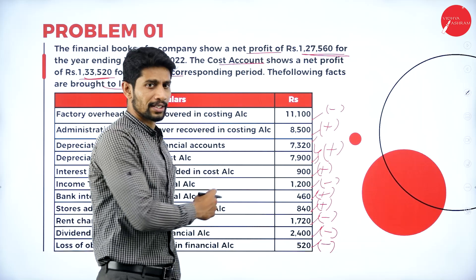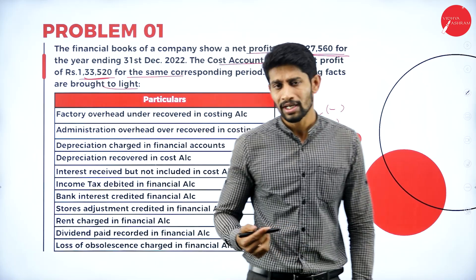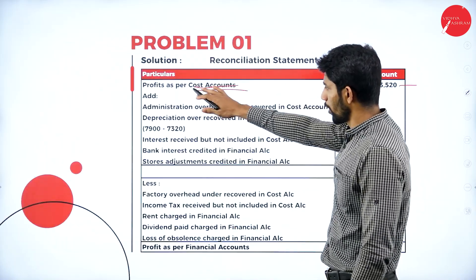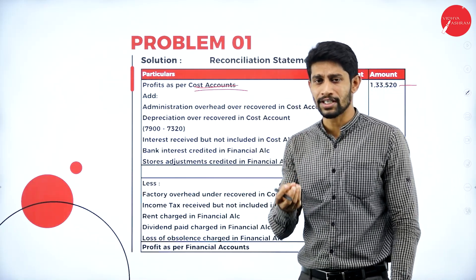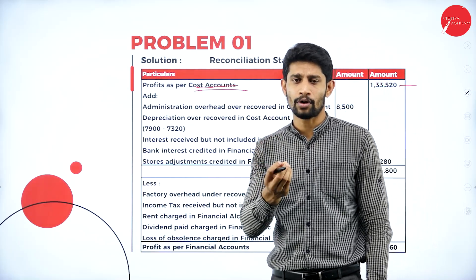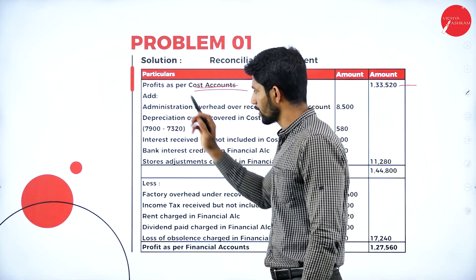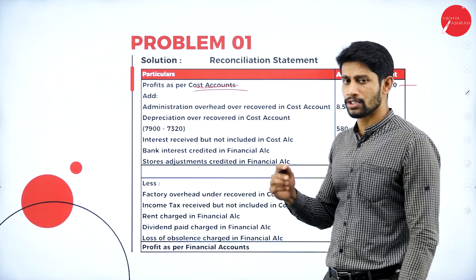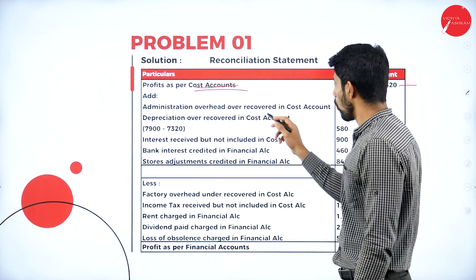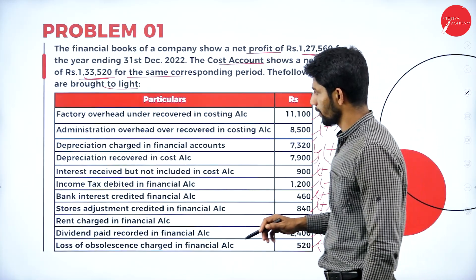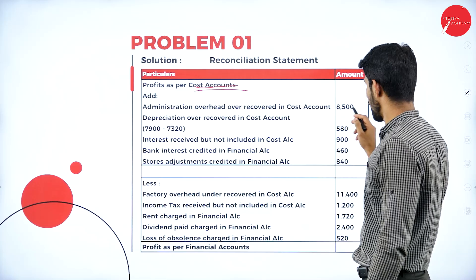When you have these factors, first note down whether you are supposed to add or deduct each item, then solve the problem. Always take cost profit as your base. Write profit as per cost accounts: Rs. 1,33,520. Now add all the items to be added. Add administration overhead over-recovered in cost account: Rs. 8,500.